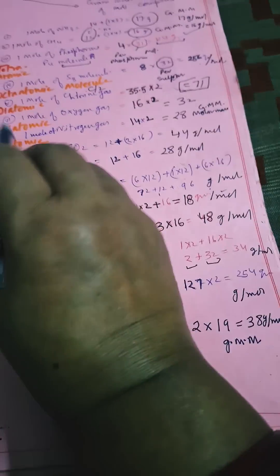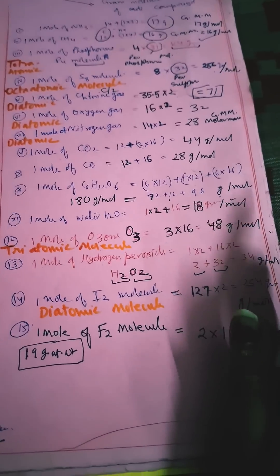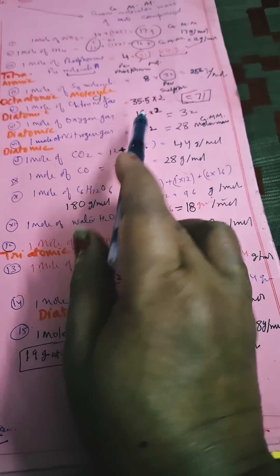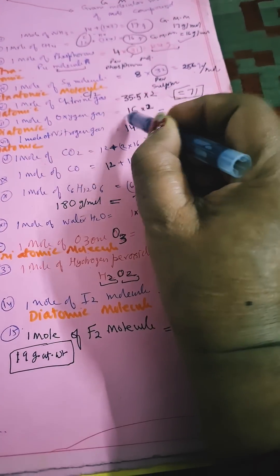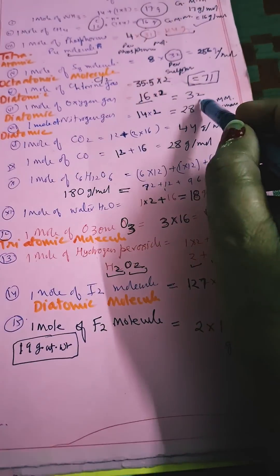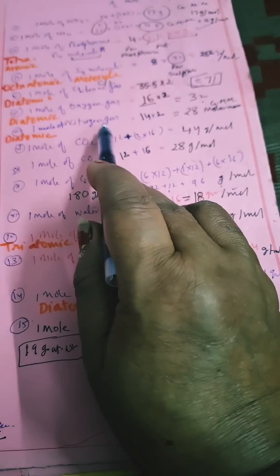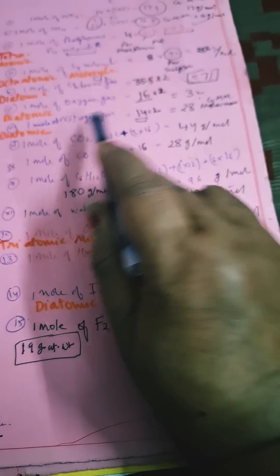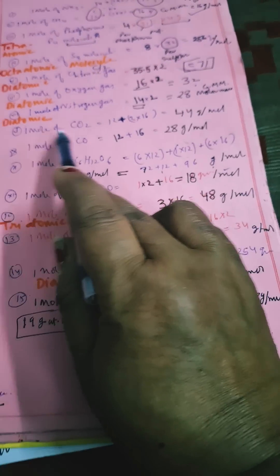Here always gram per mole you have to write because we are discussing in terms of mole only. So one mole of oxygen gas contains two moles of oxygen atoms. One mole of oxygen atom weighs 16, so 2 × 16 is 32. One mole of nitrogen is 14 grams, so diatomic N2 is 28 grams.